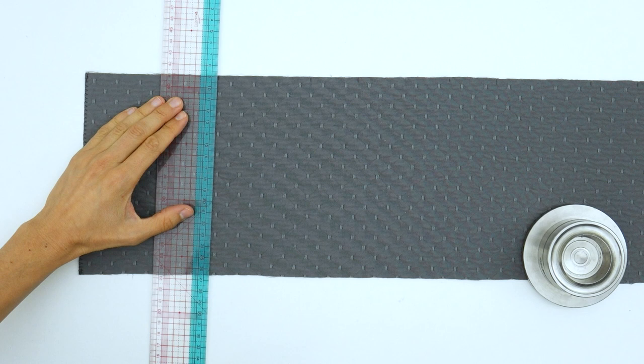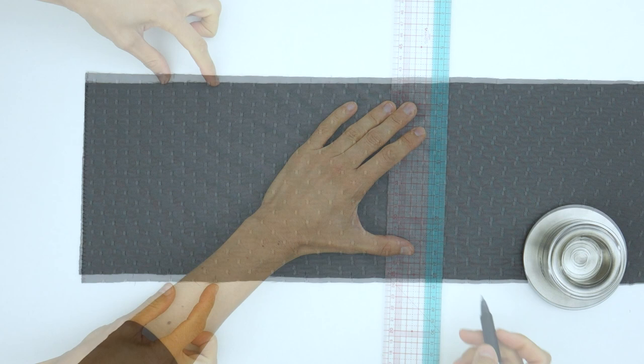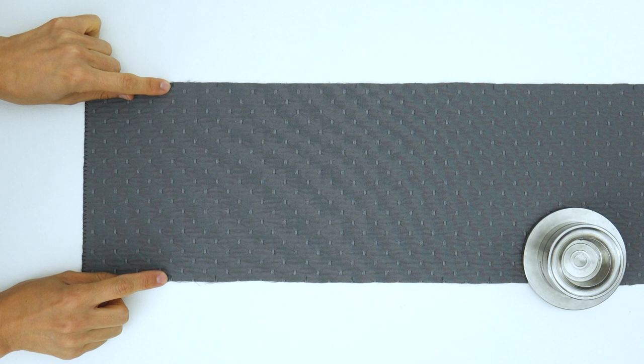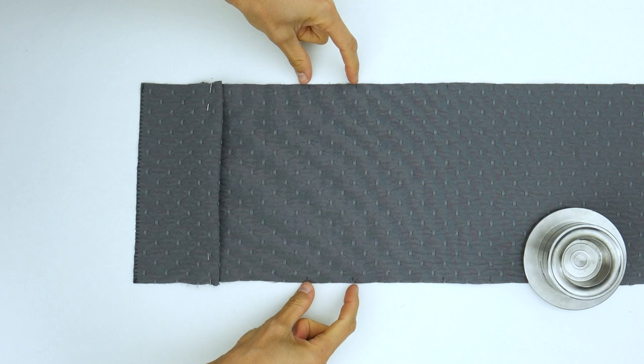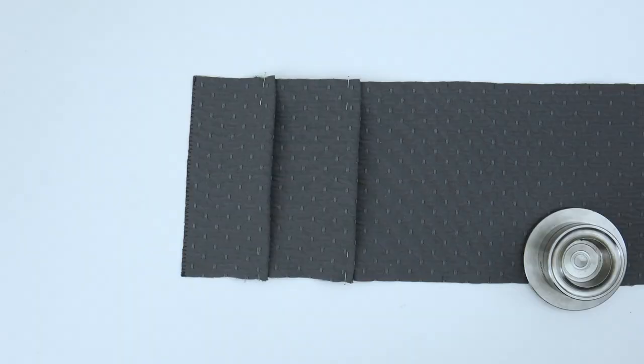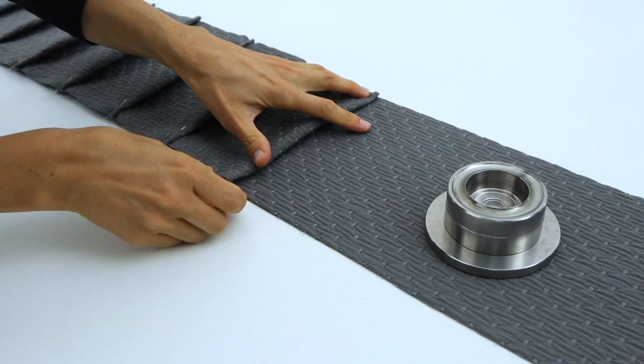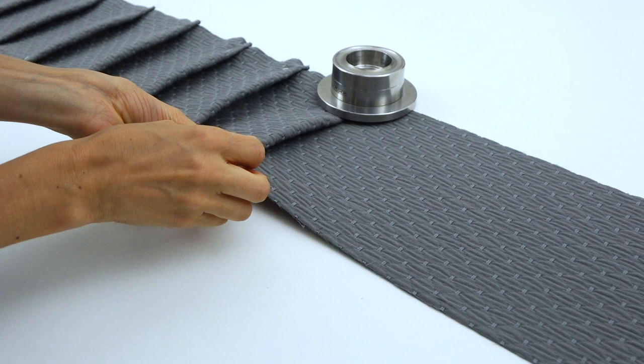When you are done with your markings, it's time to start the pleating. Have a close look. Here is our first 4 centimeter gap, the first and the second mark. I am going to pinch and fold the fabric at the first mark and place it on top of the second mark. Congratulations! You just made your first pleat. Don't forget to pin it or to press it in place with your iron. Now we will need to repeat the same operation all the way to the other end of our fabric. It may take some time but don't worry, it will be much easier than what you are seeing on the screen if you're working with simple cotton instead of this beautiful but extremely thick fabric I am fighting with at the moment.